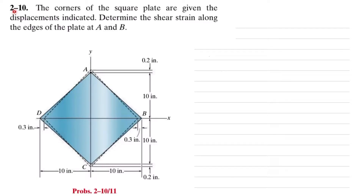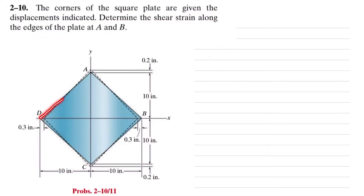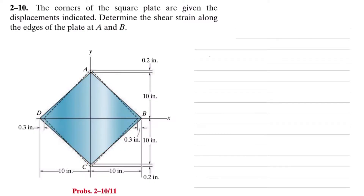Welcome back. Problem 2-10: the corners of a square plate are given displacements as indicated. Determine the shear strain along the edge of plate at points A and B. Initially this is the square plate ABCD, each having an angle of 90 degrees, and their displacements are now indicated by the dotted line. We have to find the shear strain along the edge at point A and point B.